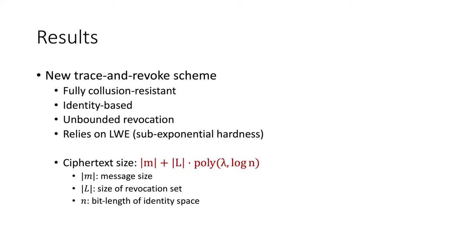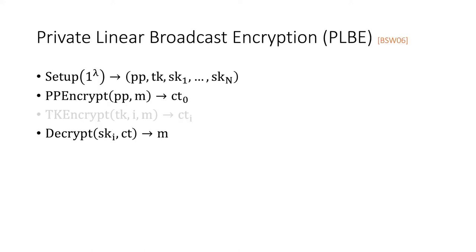For the remainder of the talk, let me give a high-level overview of our construction. Most existing constructions on traitor tracing and trace and revoke schemes follow a general paradigm of constructing or using what is called private linear broadcast encryption, or PLBE for short. This concept was first introduced by Boneh et al. in 2006 and serves as a natural stepping stone to constructing a tracing scheme. We also follow this paradigm, so let me describe it in more detail.